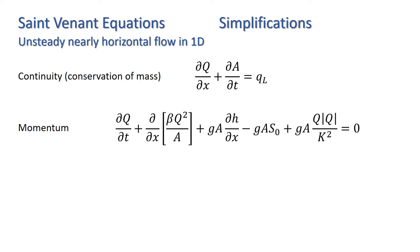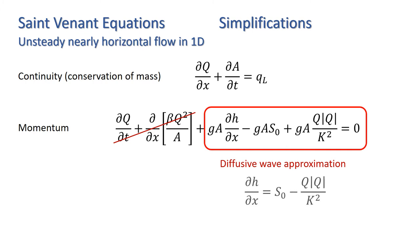If the pressure, gravity and frictional forces dominate, i.e. the last three terms in the momentum equation are much greater than the inertial force terms, we can simplify the momentum equation by ignoring the first two terms. This is known as a diffusive wave or diffusion wave approximation. The momentum equation thus reduces to dh by dx equals s0 minus q mod q over k squared. Since we are ignoring the acceleration terms, this is essentially an assumption of steady non-uniform flow.